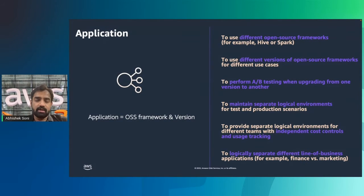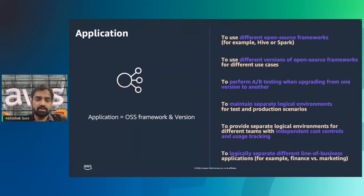One customer example: a customer had increased operational overhead because they had a shared cluster where different teams were submitting ad hoc jobs at random intervals. The job durations were undefined, some very long and some very short, and there were versioning conflicts between teams. Our enterprise support team did a deep dive, enabled the customer on EMR serverless, and the customer adopted it due to performance and cost benefits.